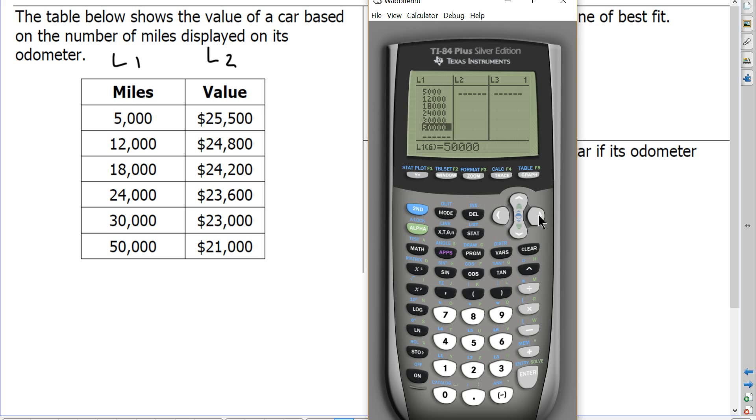So now I'm going to use the right arrow to go over to my L2 list, which will be my value in dollars, right? So the value of a car based on its odometer here. So my first entry for 5,000 miles has to be 25,500. Press enter, 24,800. Press enter, 24,200. Enter, 23,600. Press enter, 23,000. Press enter, and then the final data point is 21,000. Press enter. So I look to see my lists are even. I have the same data points. So now all of my data has been entered into my stat edit button.